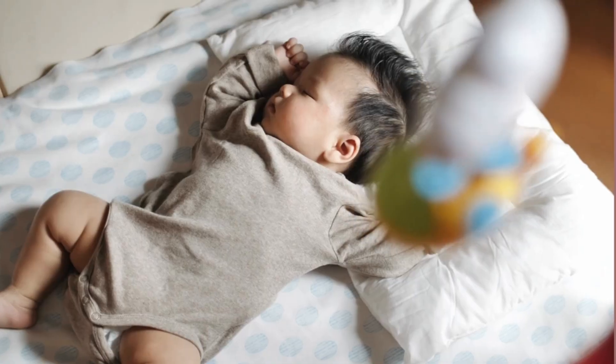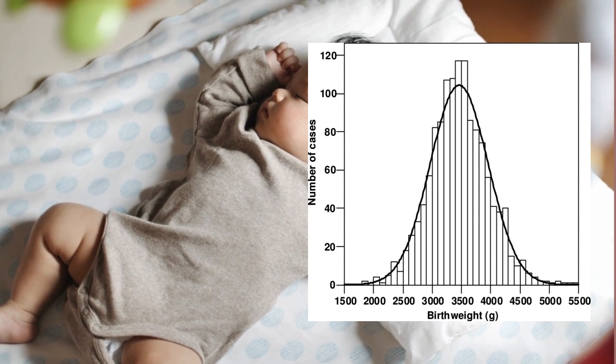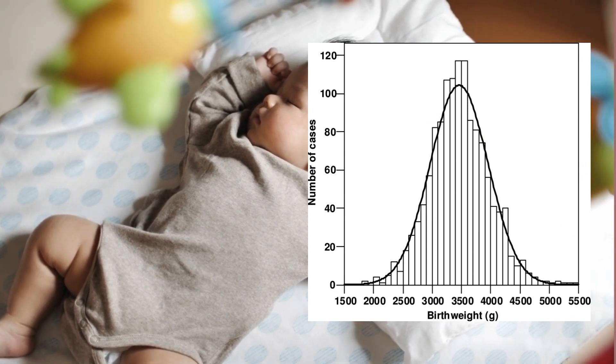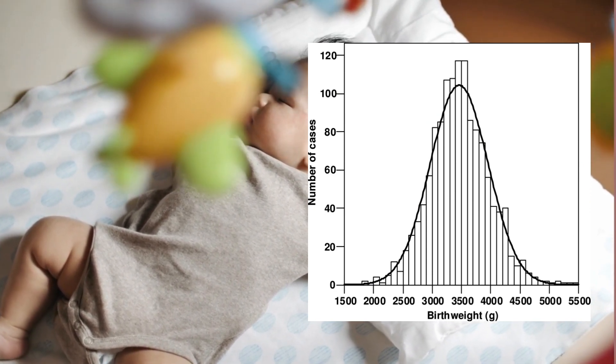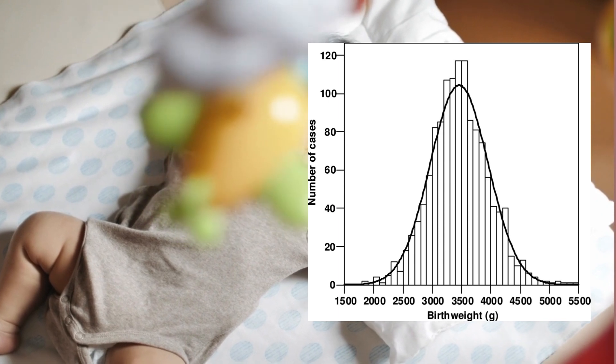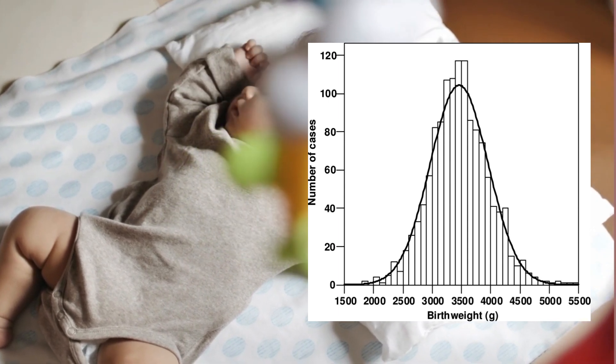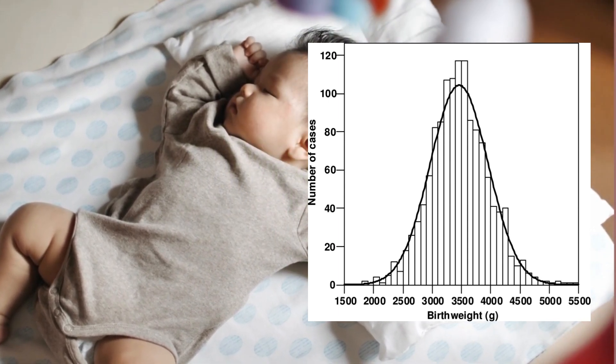Normal distributions are really important for a few reasons. One, they are a good description for some real data, like the ones we mentioned earlier. Let's take a look at some of those examples. Here's the distribution of the birth weights of babies in grams. Notice the mean in the center of 3,500 grams, but notice as we move to the extremes far left and far right, we see less and less babies at those birth weights. Guess what? It follows a normal distribution, looking like a mound or a bell shape.